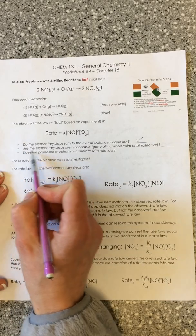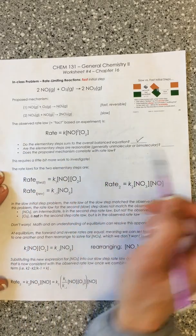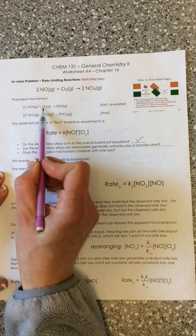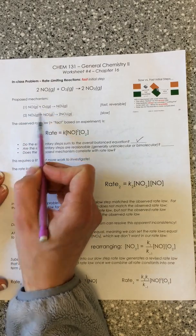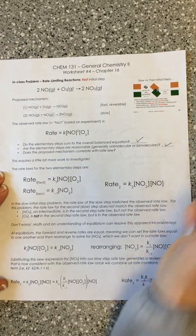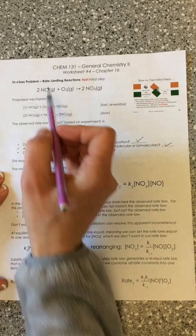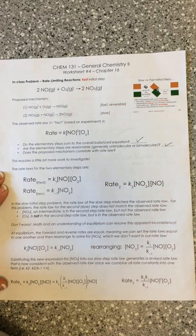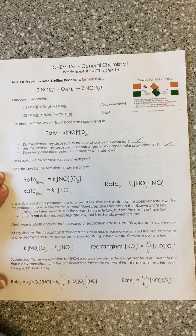Next: are the elementary steps reasonable — unimolecular or bimolecular? We have two bimolecular elementary steps, so that is valid. We looked at the initial reaction and noted it would be termolecular as a single elementary step, which is not really valid.